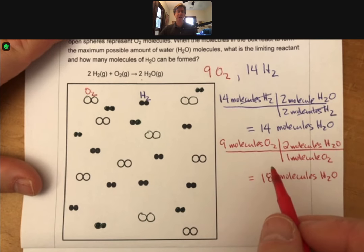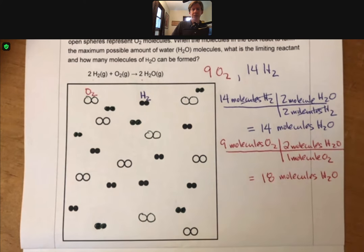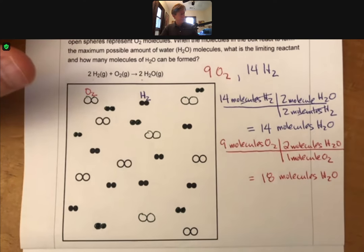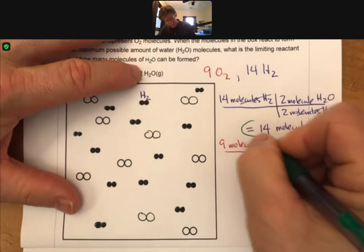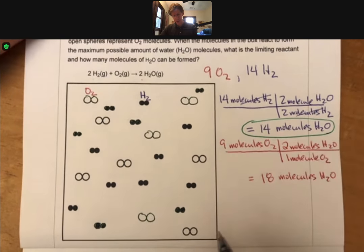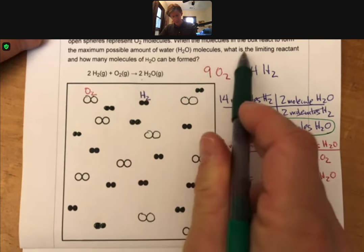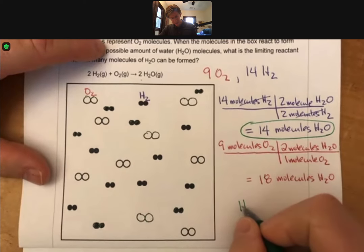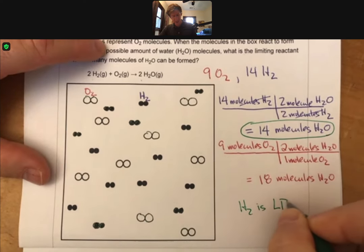And so now we can form 18 molecules of H2O multiplying across. And as always, you can make the smaller number of molecules. What that means is that we can actually make 14 molecules H2O, and hydrogen H2 is our limiting reactant.